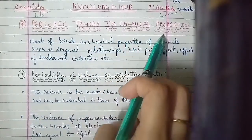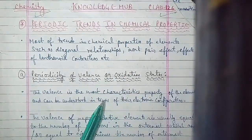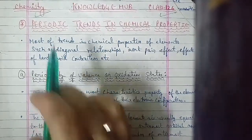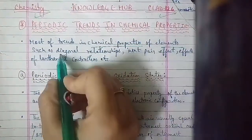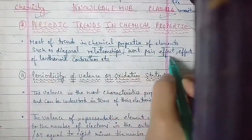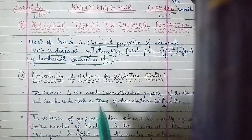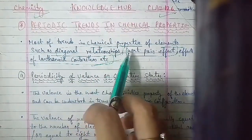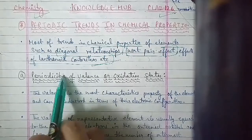Today we're going to discuss periodic trends and chemical properties. We'll discuss the periodicity of valence or oxidation state, as well as anomalous properties and anomalous behavior of elements. Most of the trends in the chemical properties of elements such as diagonal relationship, inert pair effect, lanthanide contraction, etc. will be discussed in this class.